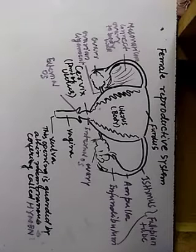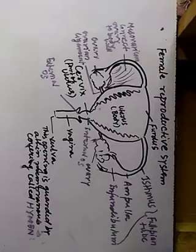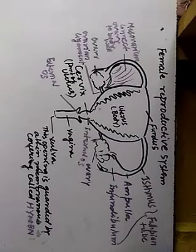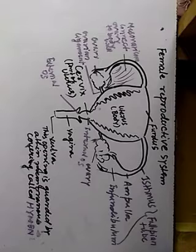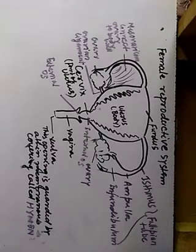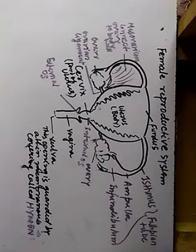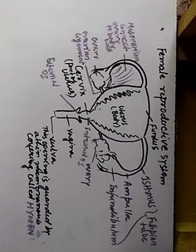Starting from the basics — the primary sex organs are the organs where actual gametogenesis takes place. Gametogenesis takes place in the ovary, and in the case of females, gametogenesis is called oogenesis. The ovary is meant for the production of ovum; each and every month one ovum is produced.